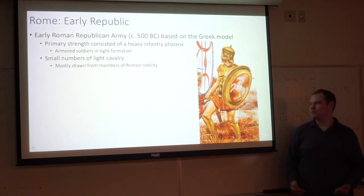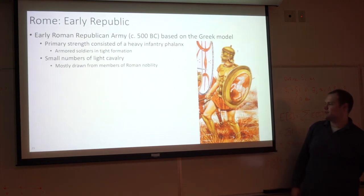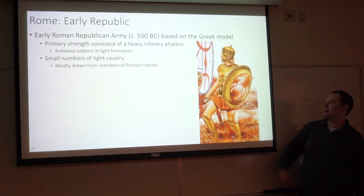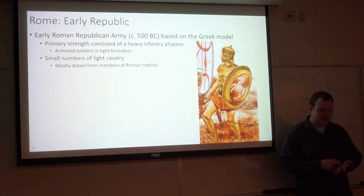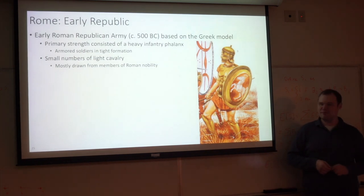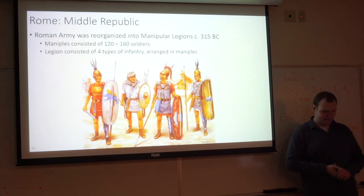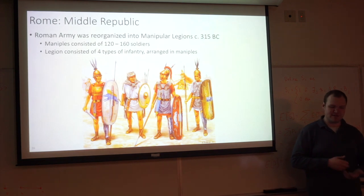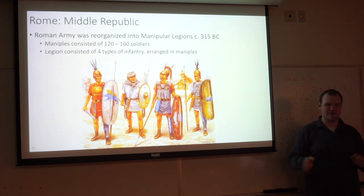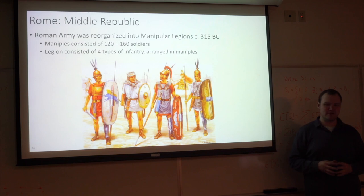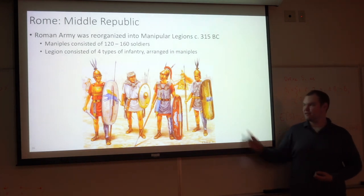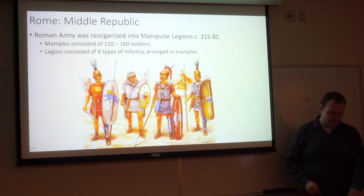The primary strength of the early Republican army was based on a heavy infantry phalanx. The equipment is very similar to the Greek phalanx: a circular shield, a sword, a spear, greaves, a giant cuirass, and a fairly hefty helmet. In the early days, the Romans also technically had a small number of light cavalry, but this was mostly drawn from nobility and really only used for reconnaissance or very light flanking attacks. In 315 BC, the Roman army was reorganized into something called the Manipular Legions, a concept partly borrowed from other tribes the Romans were fighting at the time. Manipals consisted of 120 to 160 soldiers, and each manipal was made up of one type of infantry, with a total of four types.